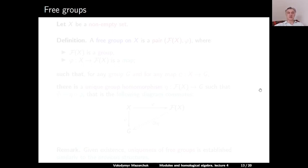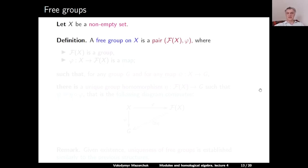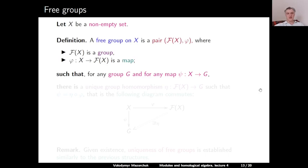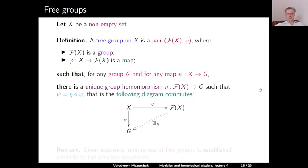Finally, let us discuss free groups — this will be a bit more complicated. Let X be a non-empty set. A free group on X is a pair consisting of a group F(X) and a map φ from X to F(X), such that for any group G and any map ψ from X to G, there is a unique group homomorphism η from F(X) to G such that ψ equals η after φ, i.e., the following diagram commutes: X, F(X), φ; X, G, ψ; and unique η from F(X) to G.